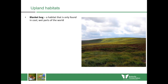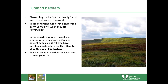The uplands have so many different habitats within them. One type of habitat is blanket bog. It's a type of habitat which is only found in the cool, wet places of the world. Those conditions mean the plants break down very slowly when they die and it forms peat. Peat can build up to very high levels — up to eight metres deep in some places and up to six thousand years old.